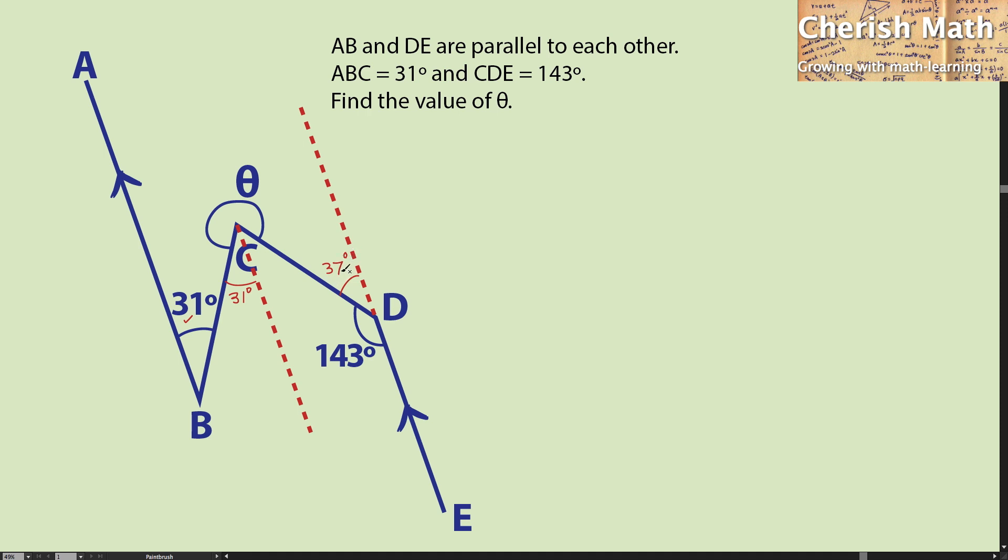Since 37 degrees is alternate to this part, it is the same as 37 degrees. To find the value of theta is simply by using 360 degrees minus 31 degrees minus another 37 degrees.